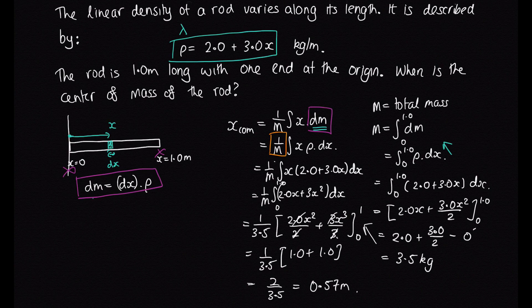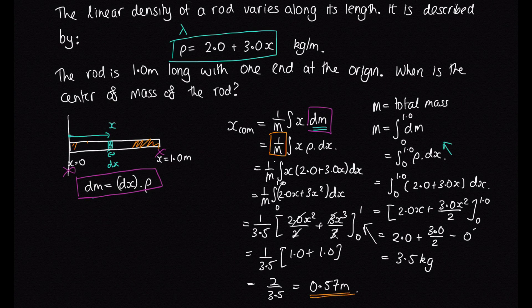Once we've done a calculation like this, we should do a careful logic check. We know that the left end of the rod is fairly light, and it gets heavier towards the right end. So because the right-hand side is heavier, we expect the centre of mass to be closer to the heavier side — further to the right than the midpoint. Our answer of 0.57 m is just past the midpoint, which makes sense.